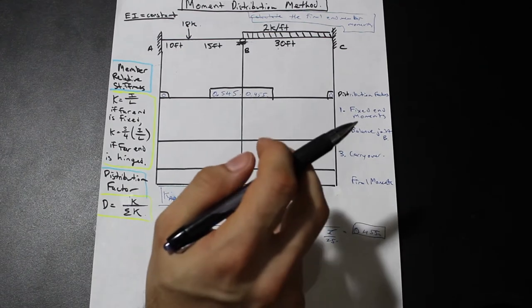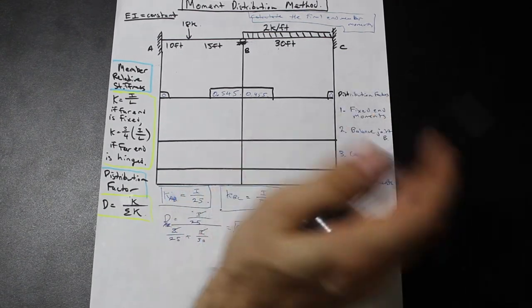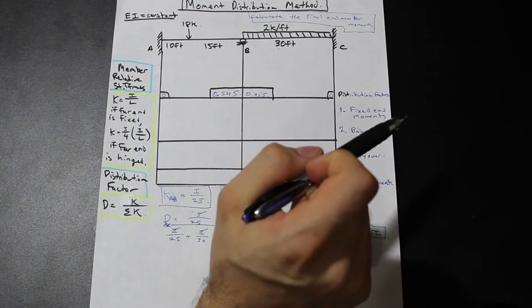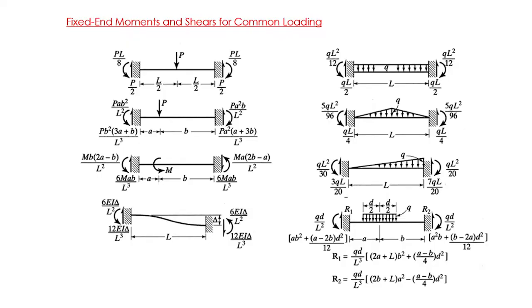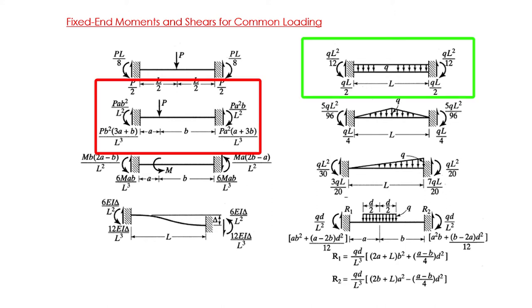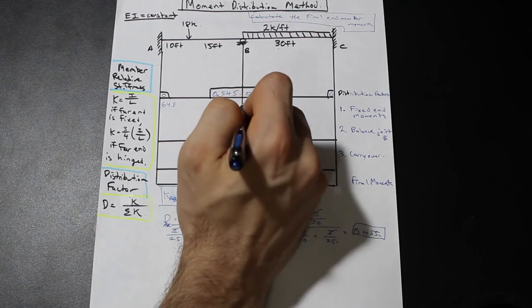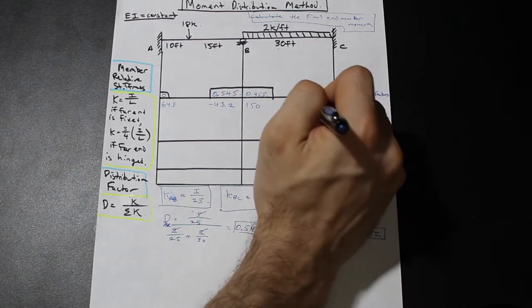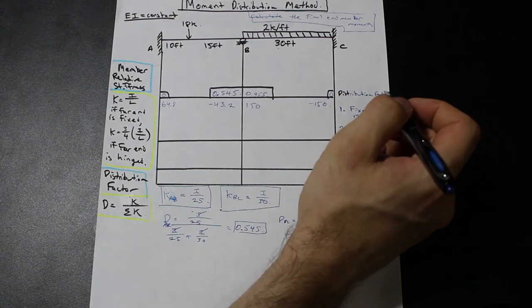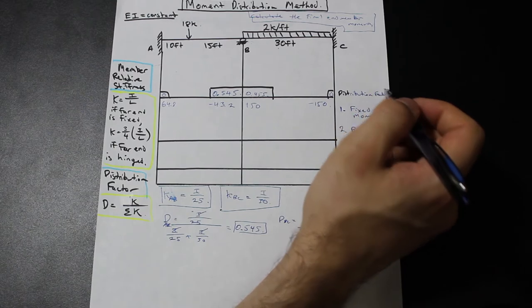After finding the distribution factors, we simply need to find the fixed end moments. I've put the fixed end moment table on screen. If you want to pause and calculate them for AB and BC, go ahead and write them in the first row of the table below the distribution factors. I won't show the calculations for fixed end moments — it's just plugging into formulas. We're here to learn the moment distribution method; we did a video on fixed end moments before if you want to refresh.